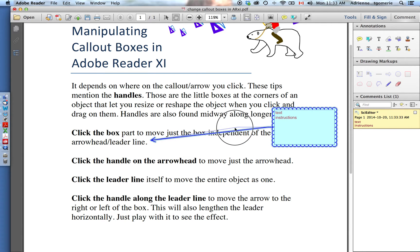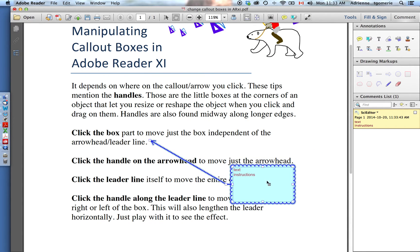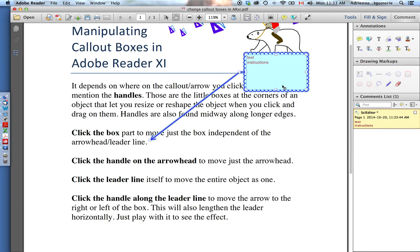You can reposition your leader line from the handle in the middle of that, and you can move the arrowhead. You'll notice as I move the text box around, the arrowhead stays anchored. If I want to move the arrowhead, I need to click that handle and drag it where I want.